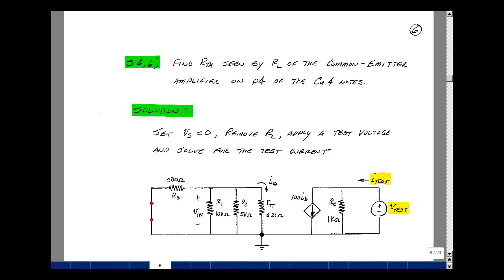This lesson deals with supplemental problem 4.6. You can find this problem in the ECE-201 ebook in the Chapter 4 Supplemental Problems on page 6. Let's find the Thevenin resistance seen by the load resistor R-sub-L in the common emitter amplifier example we did on page 4 of the Chapter 4 notes.